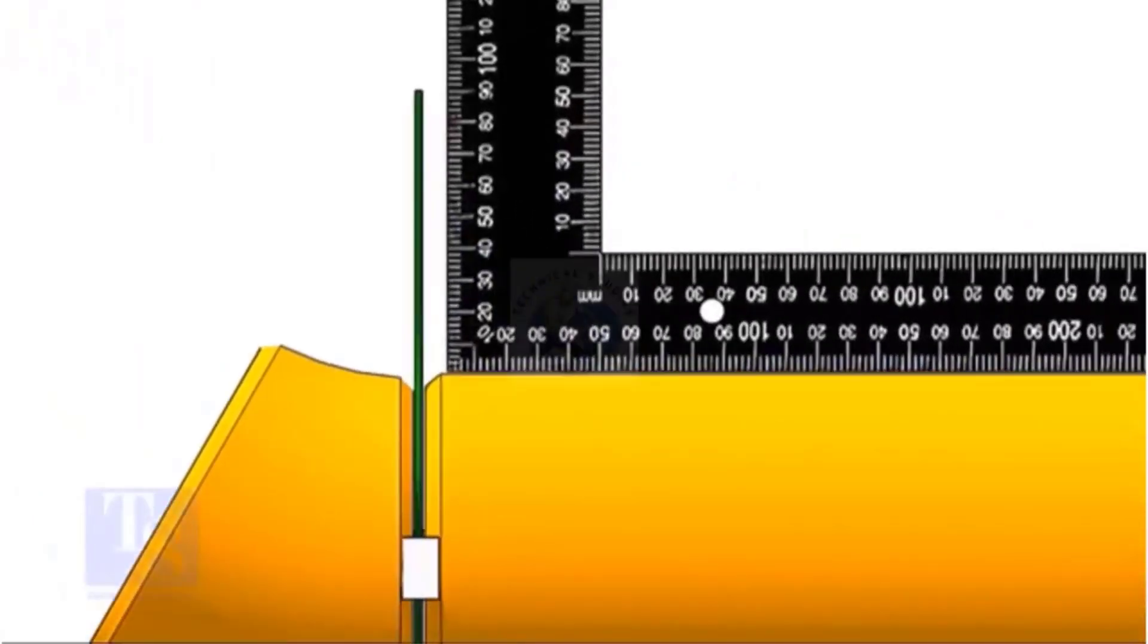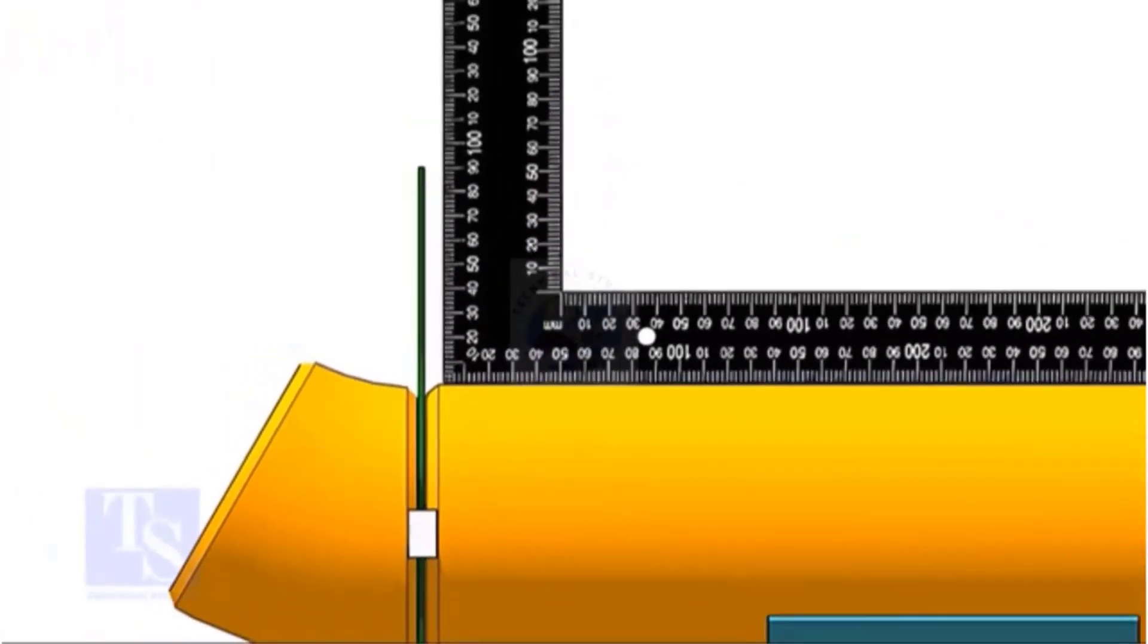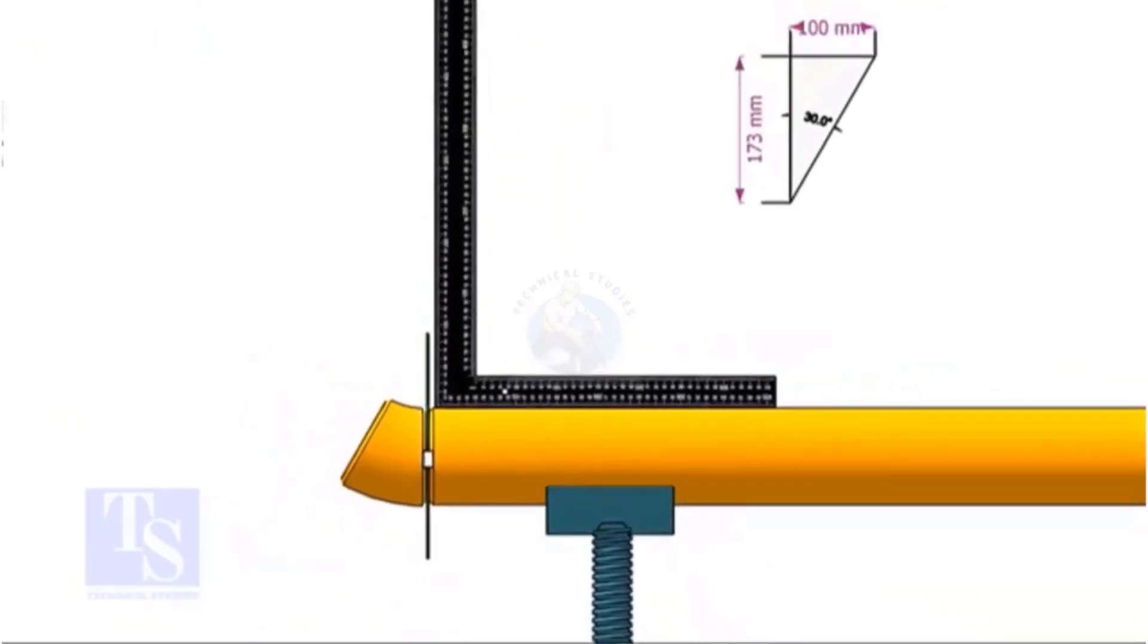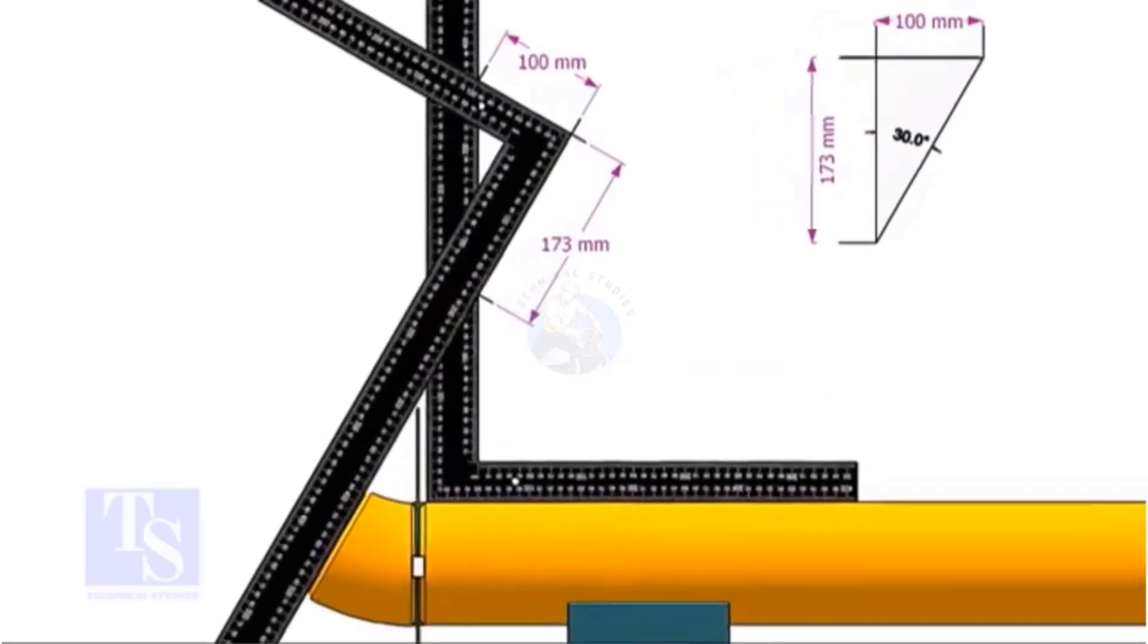After tack welding on both sides of the joint, place another right angle on the edge of the pipe. Put the right angle against the face of the elbow as shown.